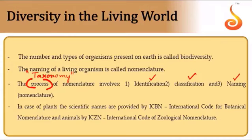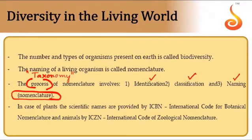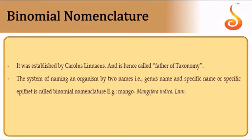Identification means attributing certain features to an organism. For example, identifying an insect by its head, thorax, abdomen, and six legs. Classification involves placing the organism into a group based on similarities and dissimilarities with other organisms. Nomenclature — the process of naming — is governed by scientific bodies: ICBN for plants and ICZN for animals. Binomial nomenclature was established by the father of taxonomy, Carolus Linnaeus.